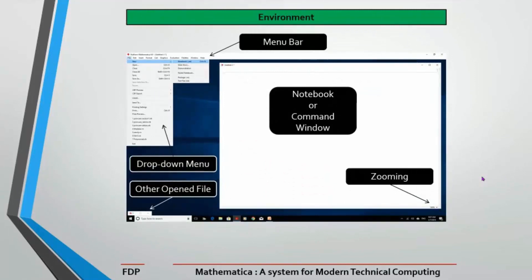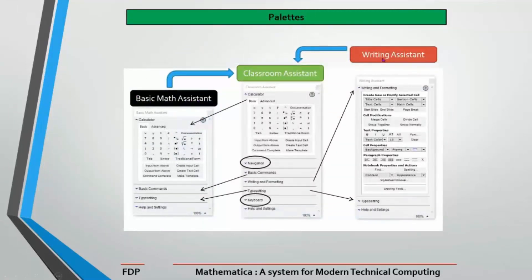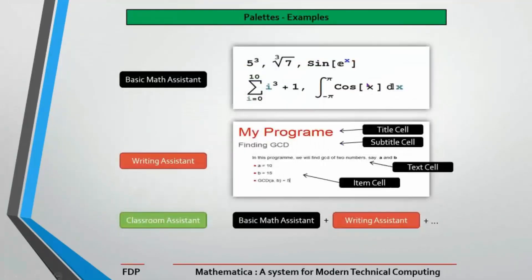When you open your Mathematica environment you will see the menu bar with a zooming option. This is your notebook; if you minimize any notebook it will appear at the bottom. Under Assistants you have Palettes — you can use Basic Math Assistant, Classroom Assistant, or Writing Assistant. In the Classroom Assistant you have all the options including navigation and keyboard. The Writing Assistant lets you create title cells, subtitle cells, text cells, or item cells.